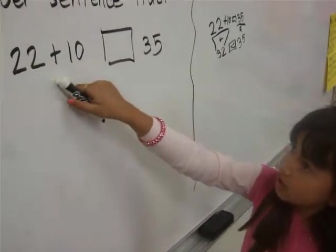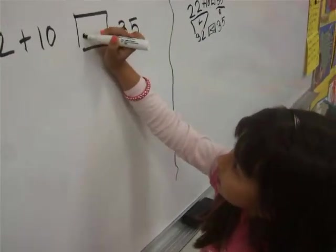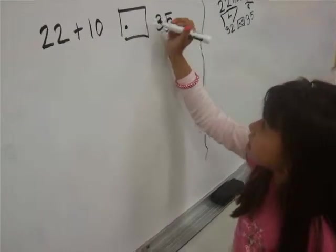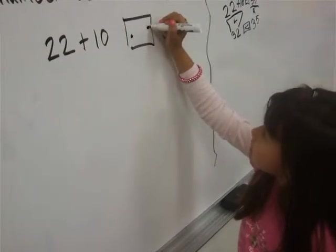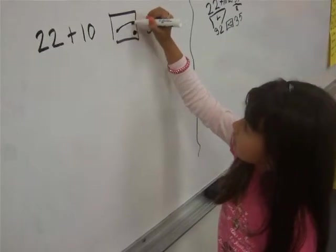So 32 plus 10 has one dot and 35 has two dots, so we connect them.